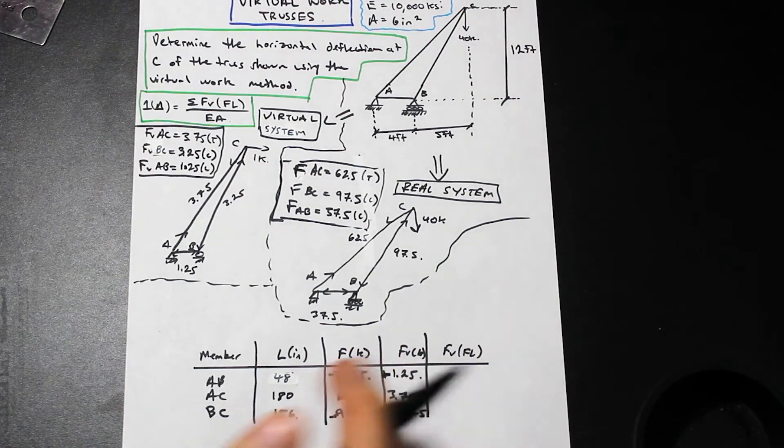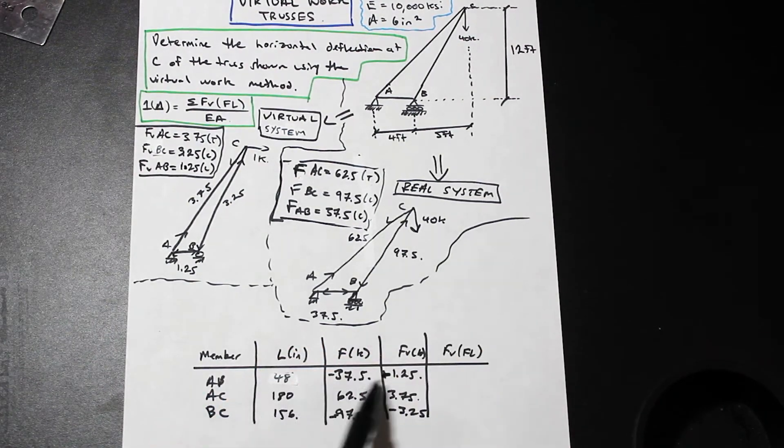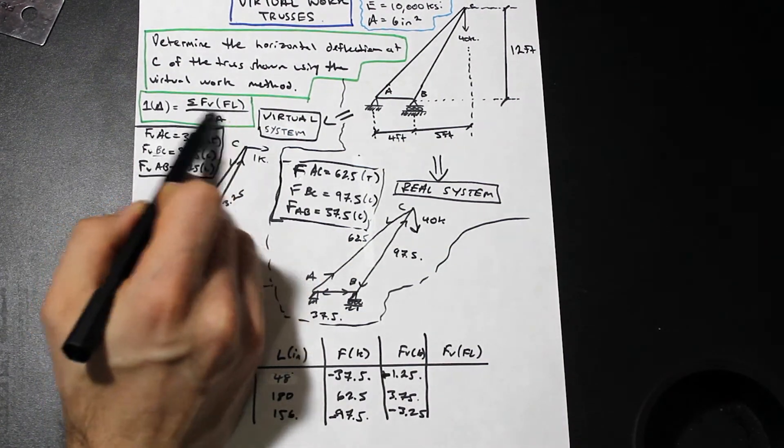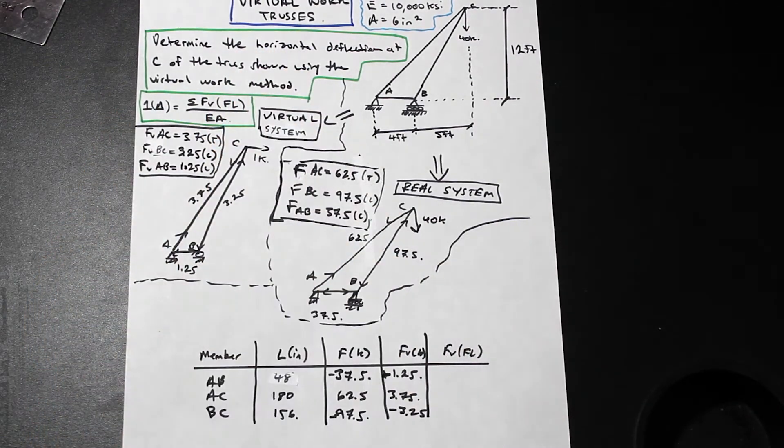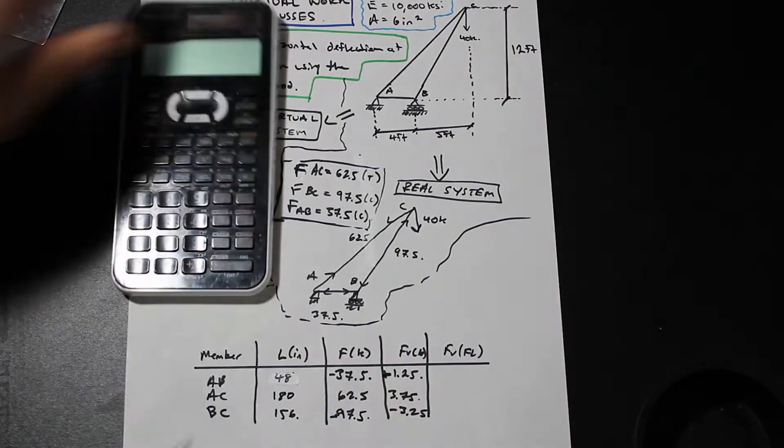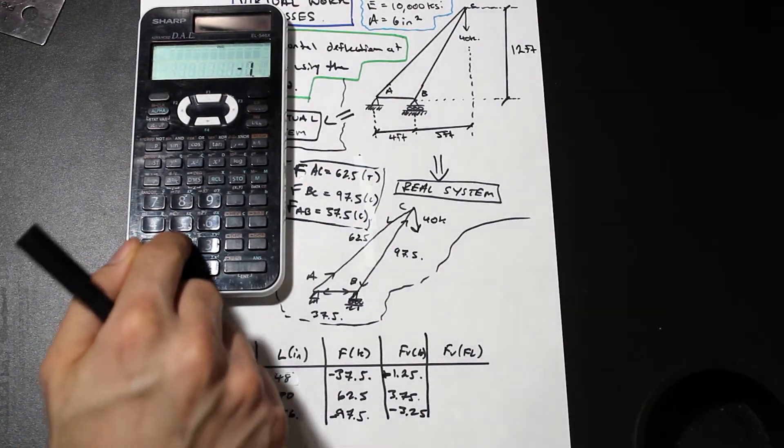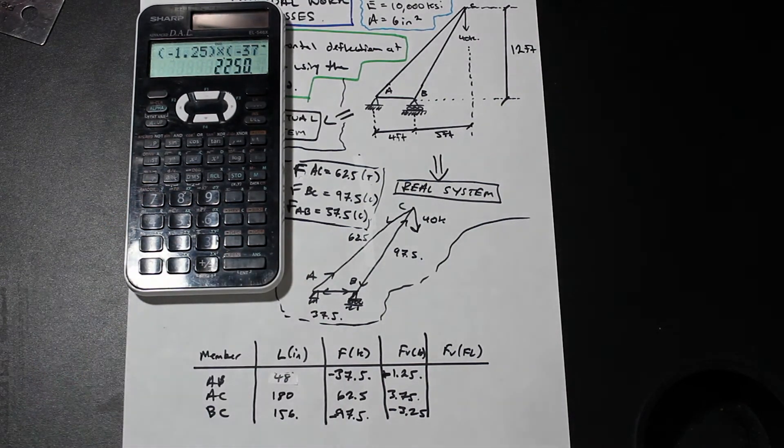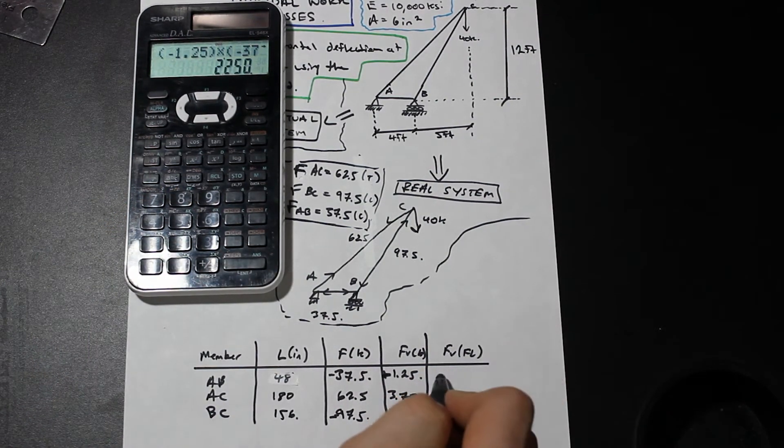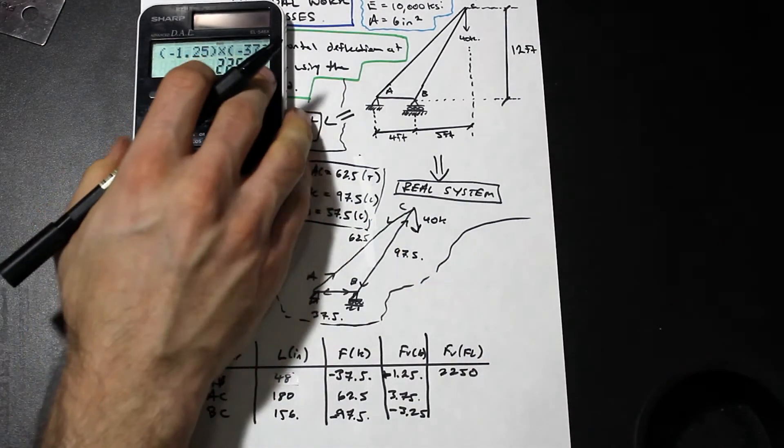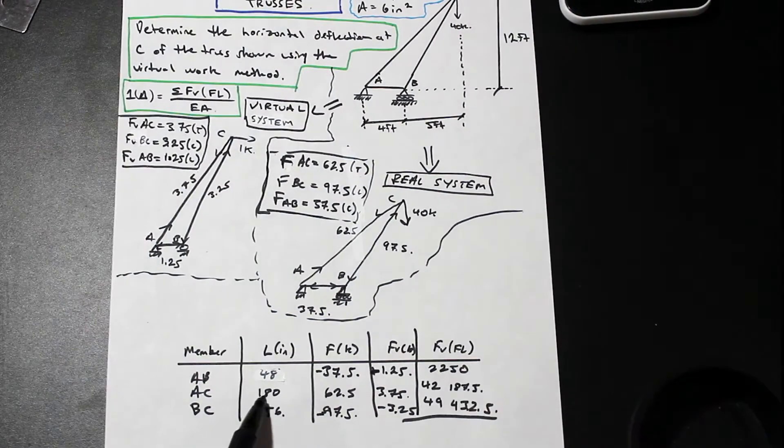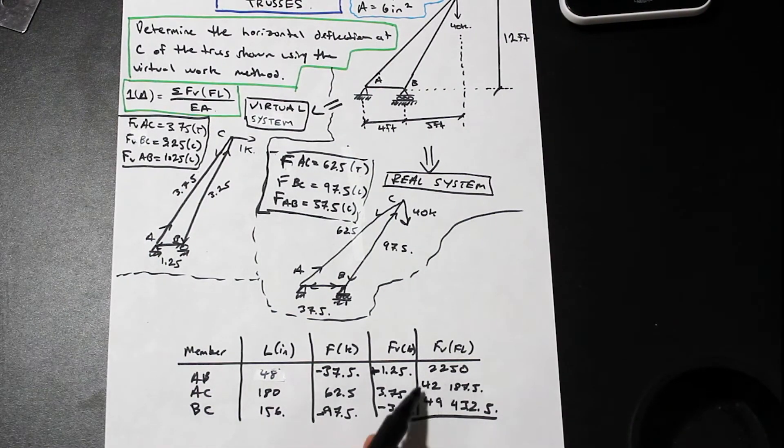And then finally, what we're going to do in our last column is we're going to multiply all of these together in each row and we're going to get a value. Then we can sum all of them and we have the numerator in the formula, just divide by EA and we get our answer, really straightforward. For the first row, we have negative 1.25 times negative 37.5 times 48. We're going to get that FVFL is 2250. You don't have to worry too much about the units, just make sure that you're using the same units that you have for the modulus of elasticity. It's 180 times 62.5 times 3.75. Multiply those, we're going to get 42,187.5.